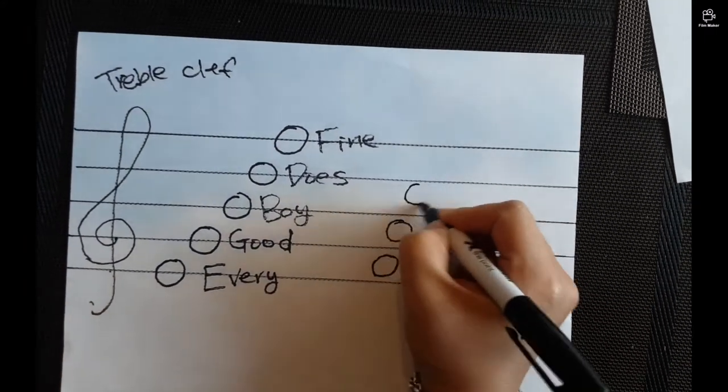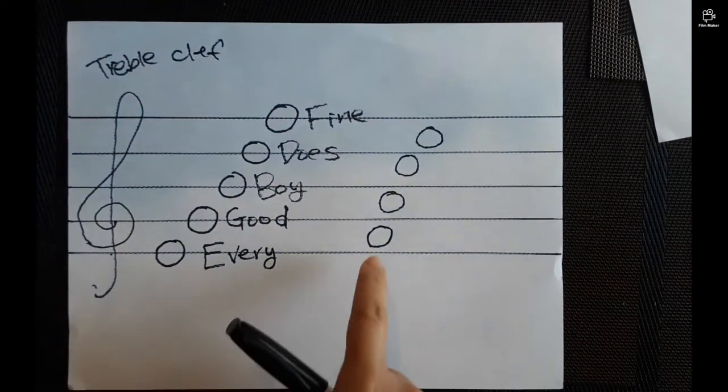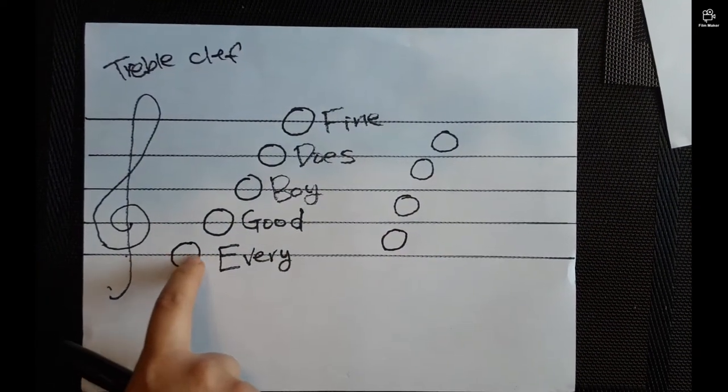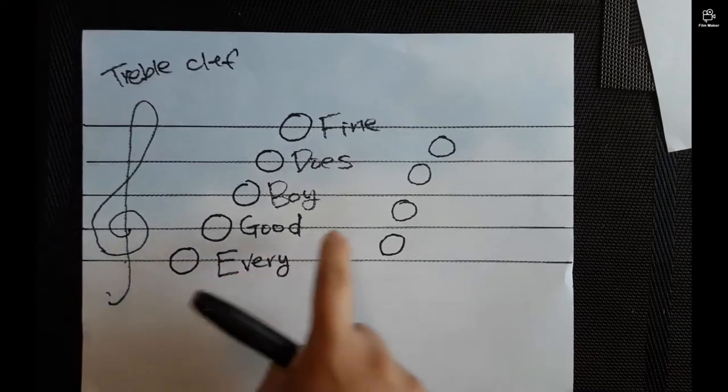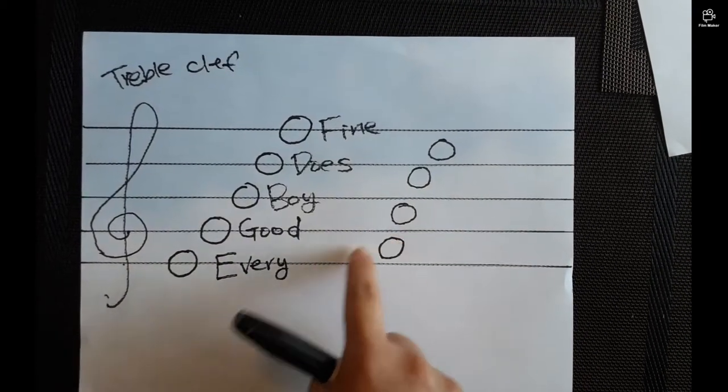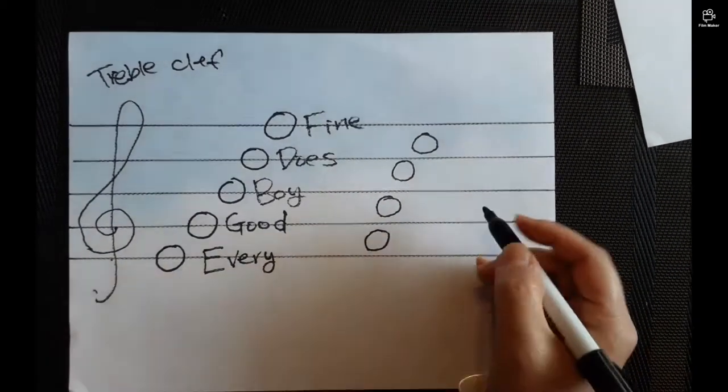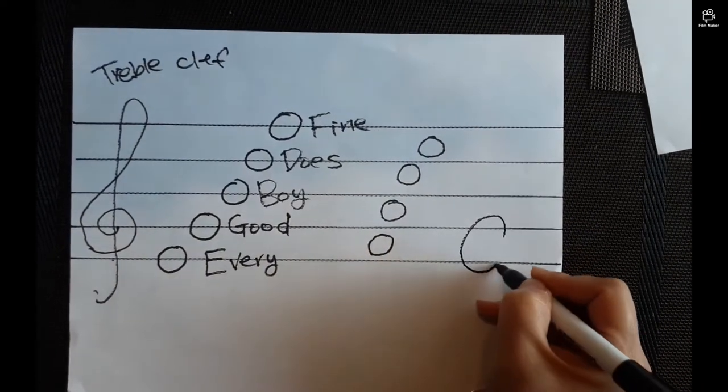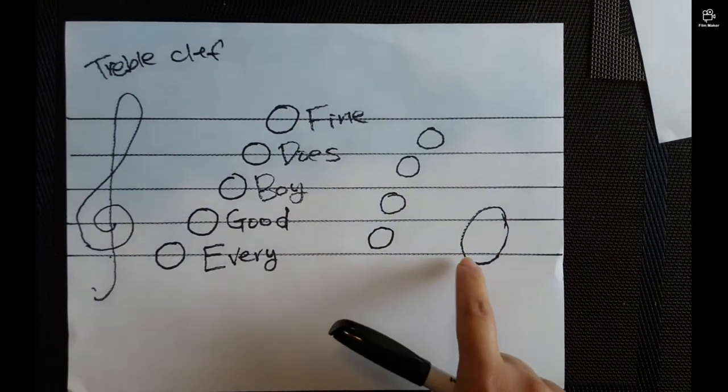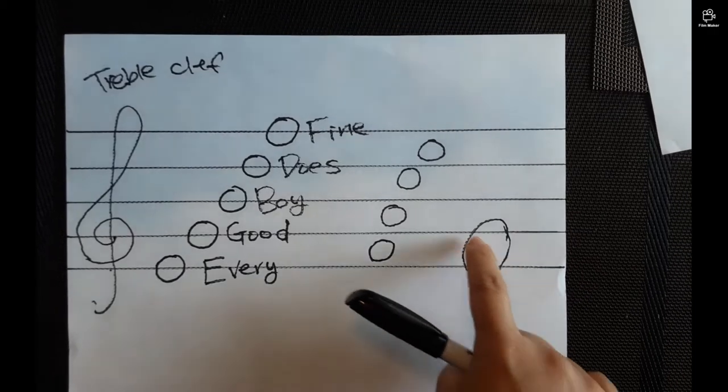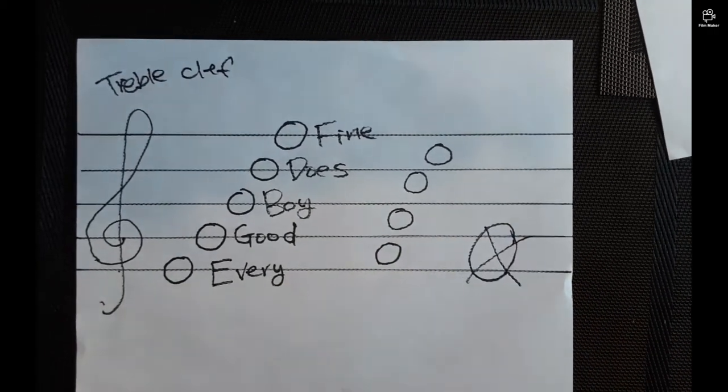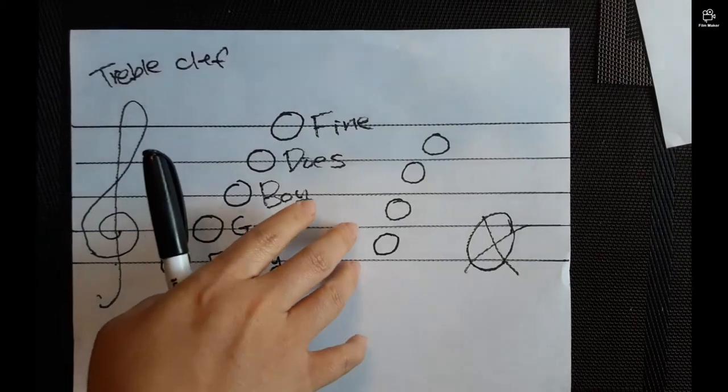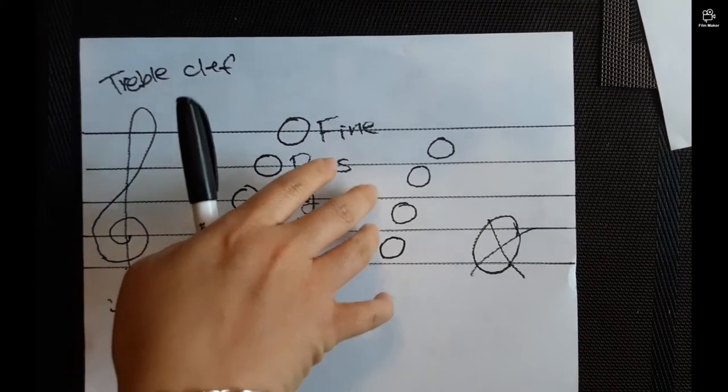And then, these are called the space notes. Because line notes have the line going through the note in the middle. But space notes have no line going through in the middle. Now, when I draw the space notes, am I doing this? No. Because then, that would have two lines going through the middle. So, that would not be a space note. Space note has to fit between the lines.